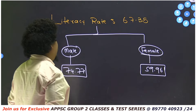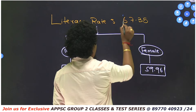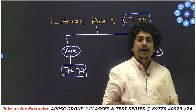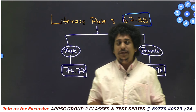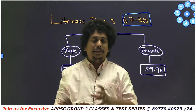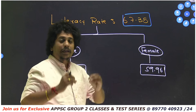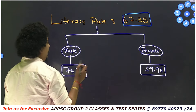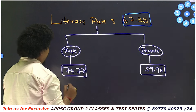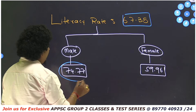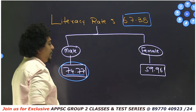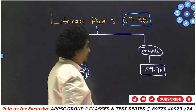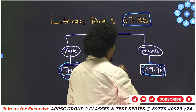Literacy rate: Andhra Pradesh's overall literacy rate is 67.35%. Out of every 100 people in Andhra Pradesh, approximately 67 are literate. The male literacy rate is 74.77% and the female literacy rate is 59.96%.